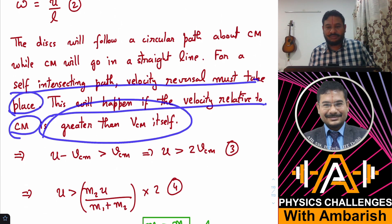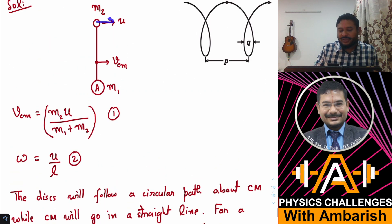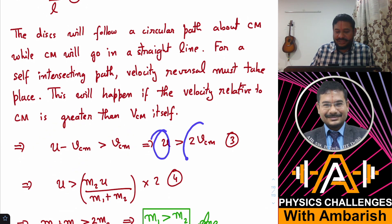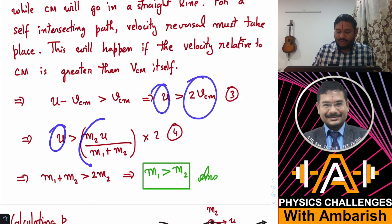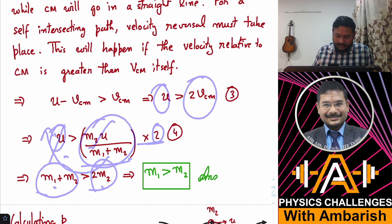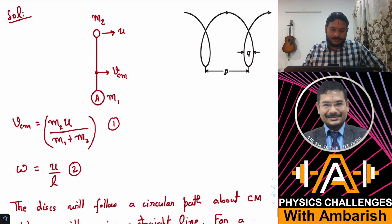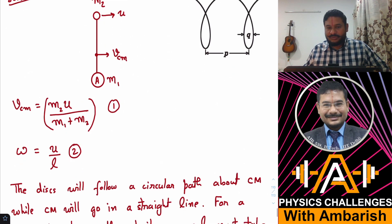For a self-intersecting path, u minus vcm must be greater than vcm, or u must be greater than 2·vcm. Substituting vcm = m2·u/(m1 + m2), we get m1 + m2 must be greater than 2·m2, which gives m1 > m2. So the mass of disk A is greater than the mass of disk B — disk B is the lighter one.